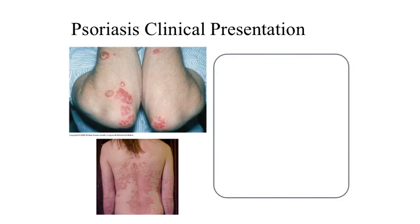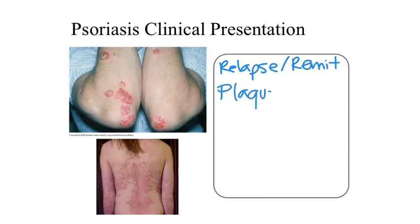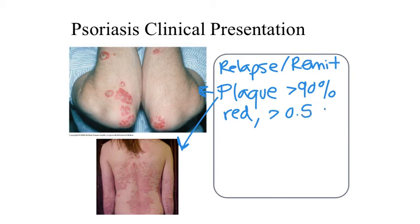Like other autoimmune conditions, psoriasis is characterized by a relapsing and remitting course. The most common presentation is plaque psoriasis, as shown in the images here, with over 90% of patients exhibiting it. These are erythematous or red plaques, usually larger than 0.5 centimeters in diameter, and typically confined to a single location such as the knee, elbow, or back of the neck. They can also cover a wide body surface area and be associated with itching. These plaques are exacerbated by certain drugs, stress, and changes in the weather.